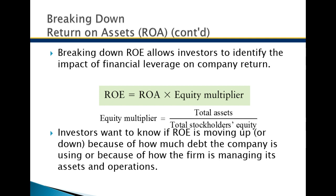For investors, you're really interested in return on equity. You can break down return on equity as return on assets times the equity multiplier. The equity multiplier is total assets divided by total shareholder's equity. So if assets are $1 million and equity is $100,000 — meaning you put $100,000 down and borrowed $900,000 — your multiplier is 10. Whatever the return on assets is, you're going to multiply by 10.